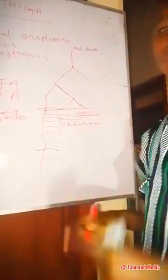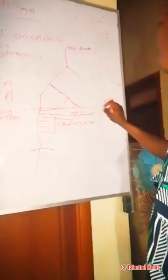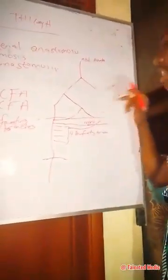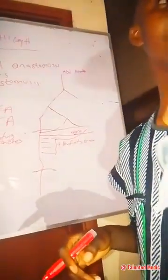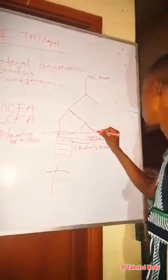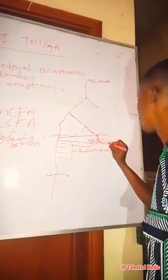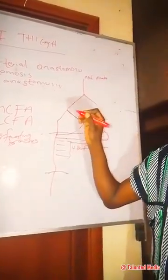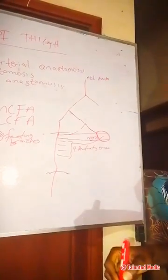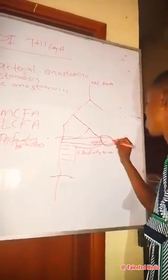Together — the ascending of the first perforating branch of the profunda femoris artery, the descending of the inferior gluteal artery, the transverse of the medial circumflex, and the transverse of the lateral circumflex femoral artery — they form the cruciate anastomosis at the level of the lesser trochanter.